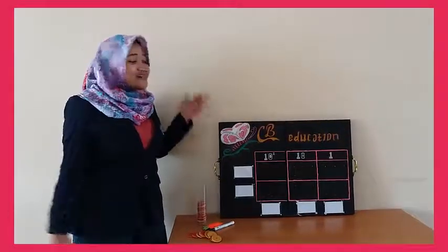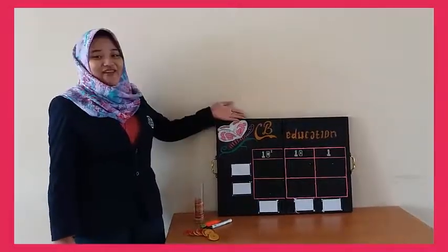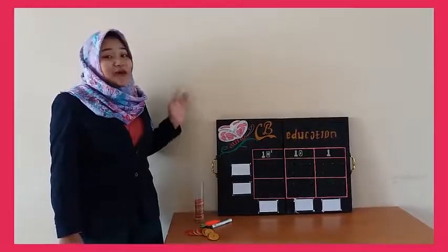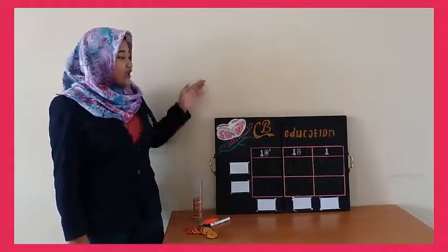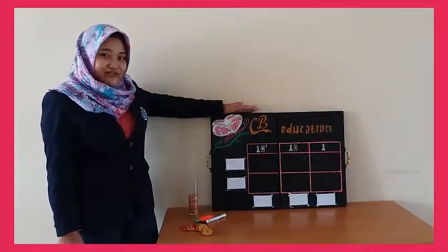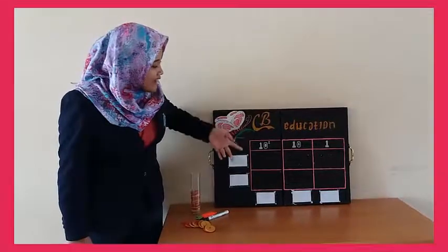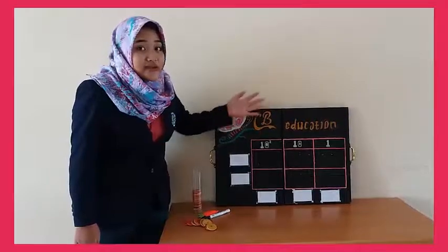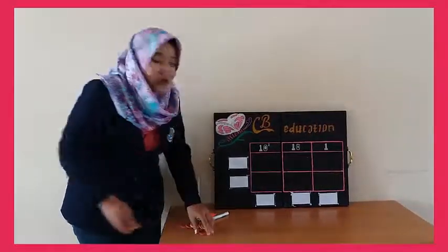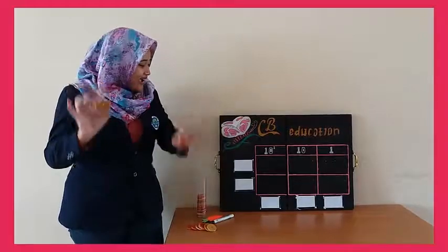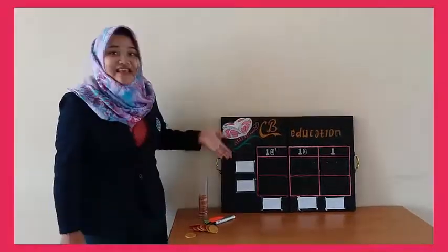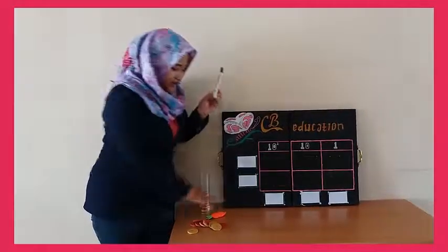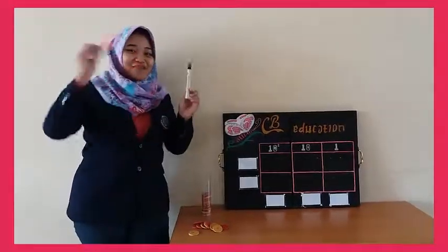CV Education adalah Chip Abacus Education. Apa saja komponennya? Yaitu ada papan Chip Abacus, dan di dalam papan ini ada tabel dengan 3 kolom yang berisi ratusan, puluhan, dan satuan. Lalu yang kedua kita mempunyai chip. Lalu ada papan angka, speed dog, dan penghapus yang lucu.